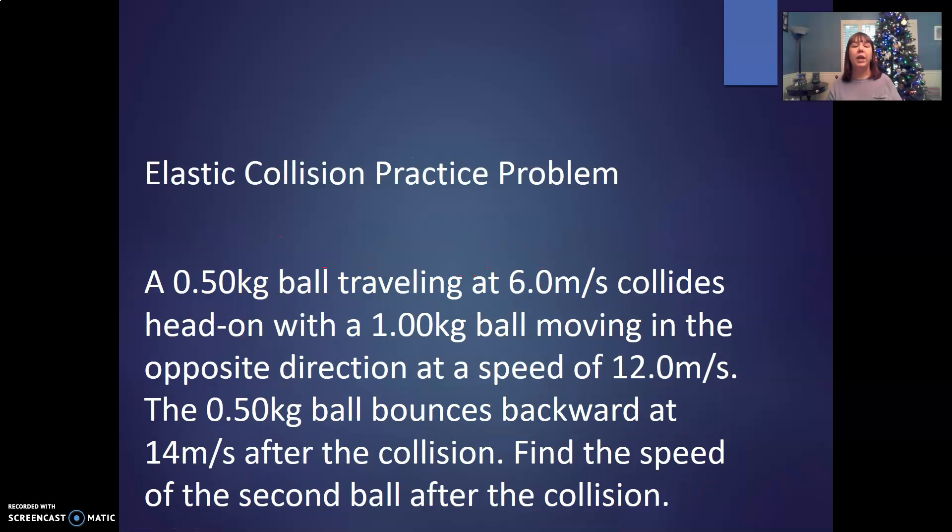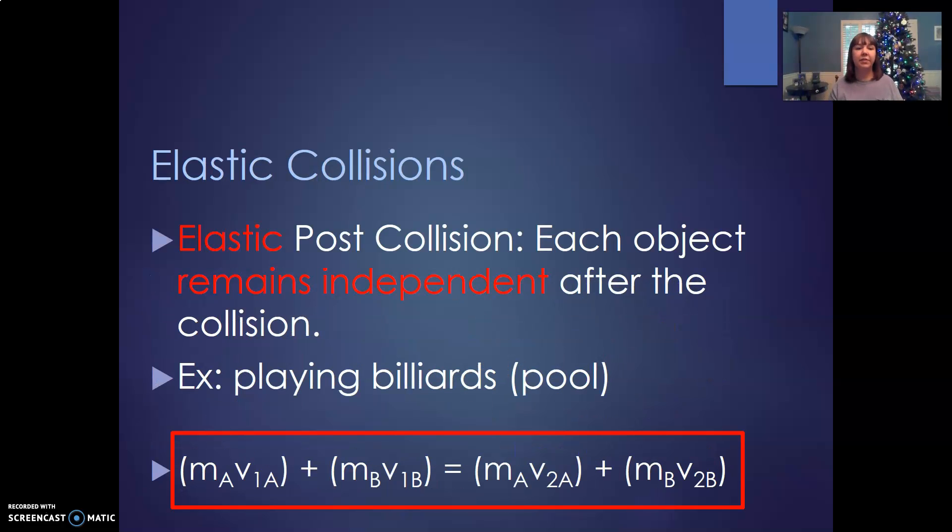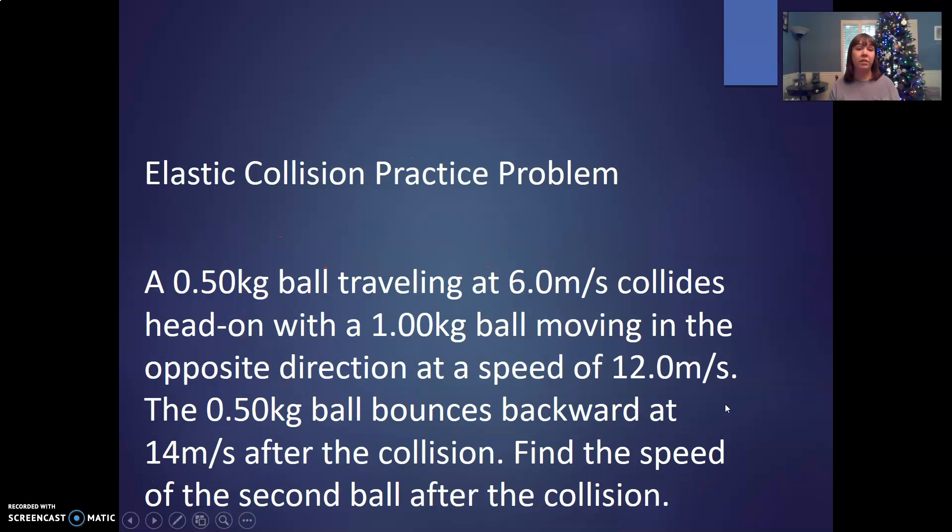The alternative to that is when we have a collision in which they combine together. So with an elastic collision, we've got a half kilogram ball traveling at six meters per second, collides head on with a one kilogram ball moving in the opposite direction at a speed of 12. The half kilogram ball bounces backwards at 14. What is the speed of the second ball after the collision? So to figure this out, you have to ask yourself, and if you need to highlight or label, make a little table, any of that will help, figure out what's ball A and ball B and identify their masses. You can go ahead and put those in. You can put in the velocities that we know and use all that to solve for the velocity that we don't know.